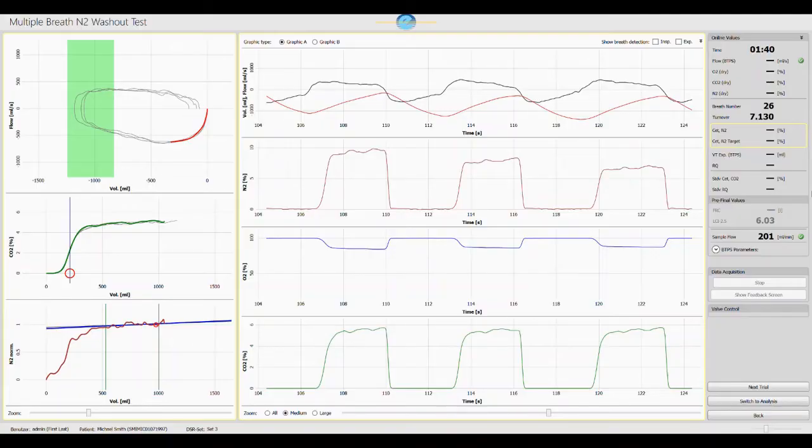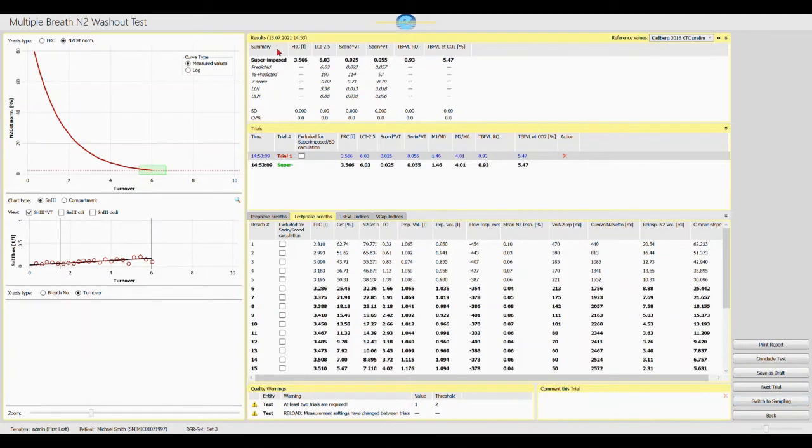Now we switch to the results. The results screen is divided into the summary section, the trials section and the individual breath section. In each section it is possible to display additional parameters by clicking on the chevron. The window at the bottom displays any quality warnings which are recognized by the software, for example if the inspiratory flow exceeds the bypass flow so that the subject breathes ambient air.